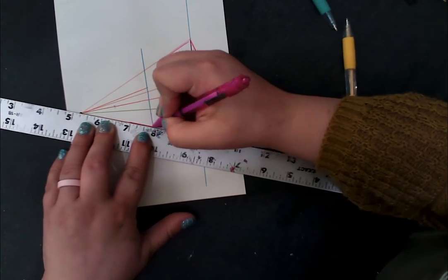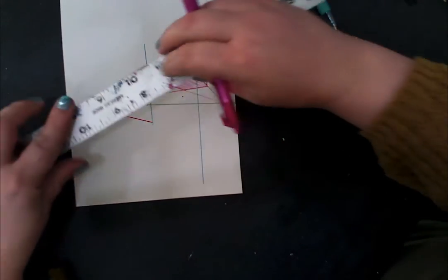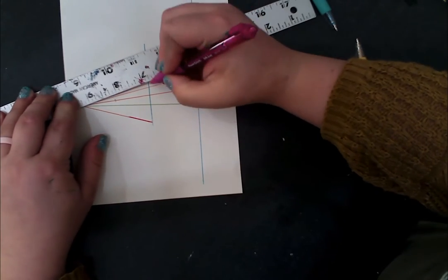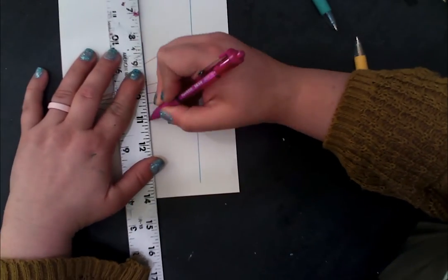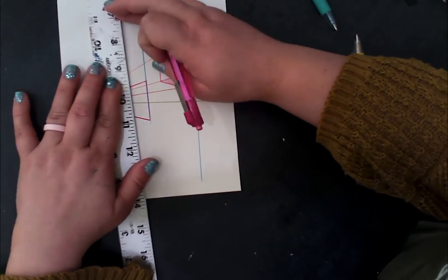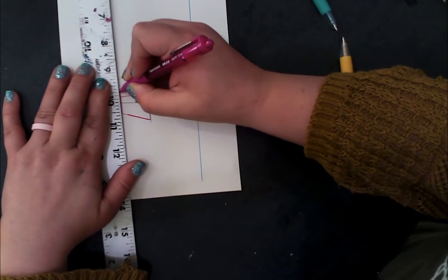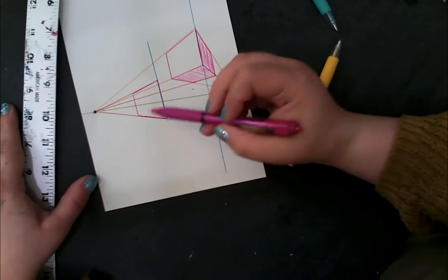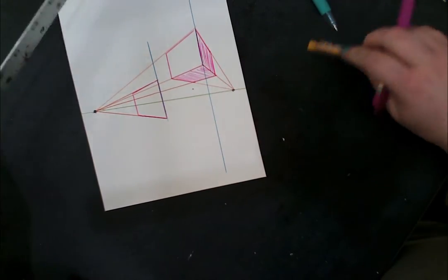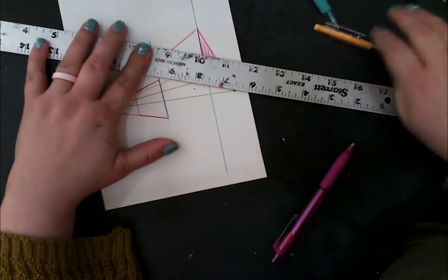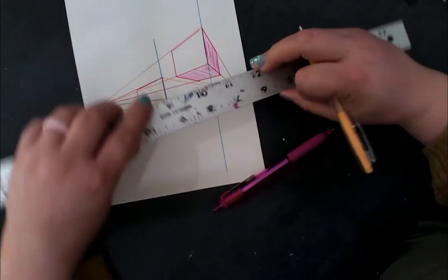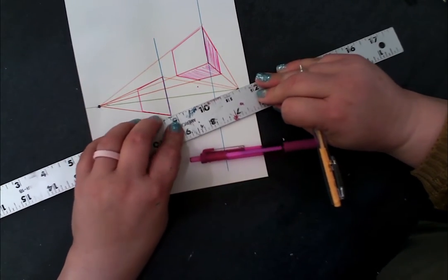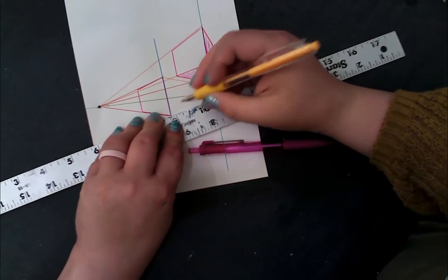Bottom below the horizon line, top above the horizon line. Station point, parallel line. Can't see the bottom or the top. Come back, guideline for the right side, top and bottom.